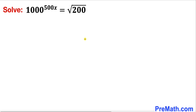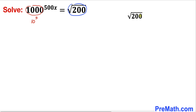Let's get started with the solution. The first thing we are going to do is focus on the base 1000. 1000 can be written as 10 to the power 3. Now let's focus on the right hand side: square root of 200.